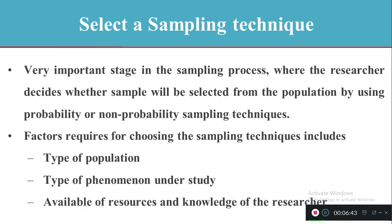To select the sample we need to consider some factors. The first factor is the type of population — when you know what your population is and its characteristics, it is easy to select the sample. The second factor is the type of phenomenon involved in your study. For experimental research design we need to go for probability sampling, whereas for descriptive research we go for non-probability sampling.